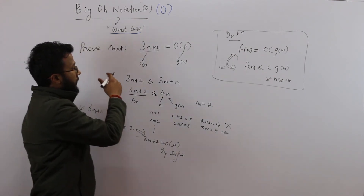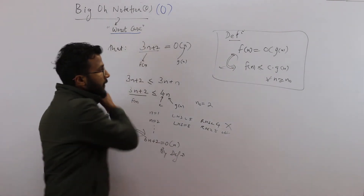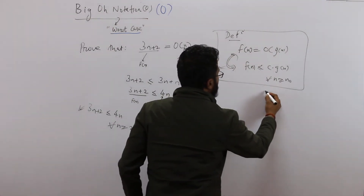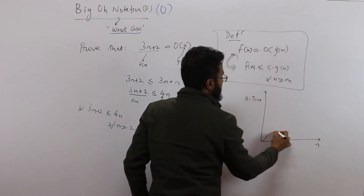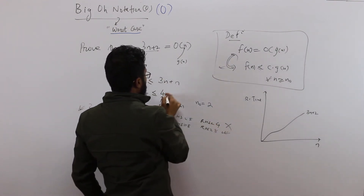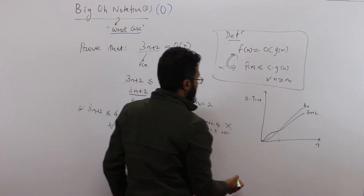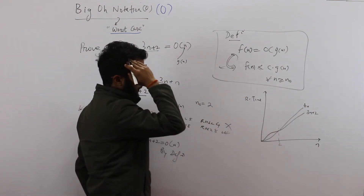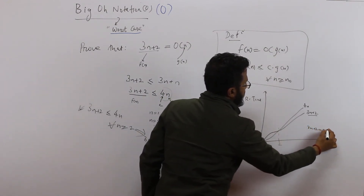So 3n plus 2 is upper bounded by the curve 4n. Let's plot this: the x-axis is input n and y-axis is running time. fn is 3n plus 2, and I have shown it is less than or equal to 4n. So 4n upper bounds fn, and this is only true after n₀ equals 2 — only for values greater than or equal to 2. So 3n plus 2 is Big O of n.